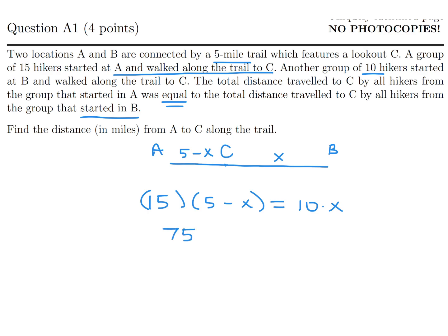So here we go. So that would be 75 minus 15X is 10X. And therefore 75 would be 25X. Therefore X is 3. And therefore 5 minus X would be 5 minus 3, which is 2. And what are they asking for? The distance from A to C. So from A to C is 5 minus X and that would be 2.